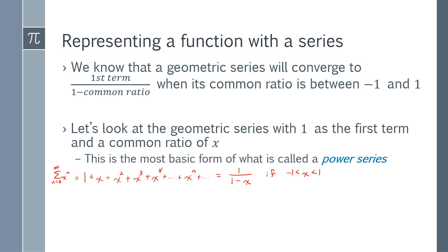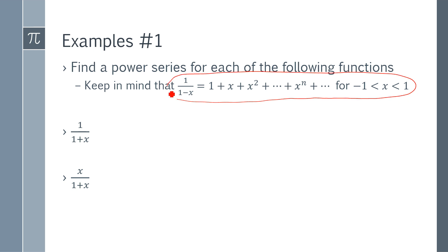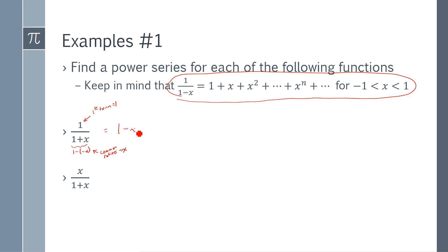We are limited in the types of functions we can do with this, but let's look at some examples. Keep in mind what we just figured out. If I have one over one plus x and I want a power series that converges to that, I can rewrite one plus x as one minus negative x, so my first term is one and my common ratio is negative x. So I'd have 1 + (−x) + (−x)² + ... which gives me the sum of (−x)^n.